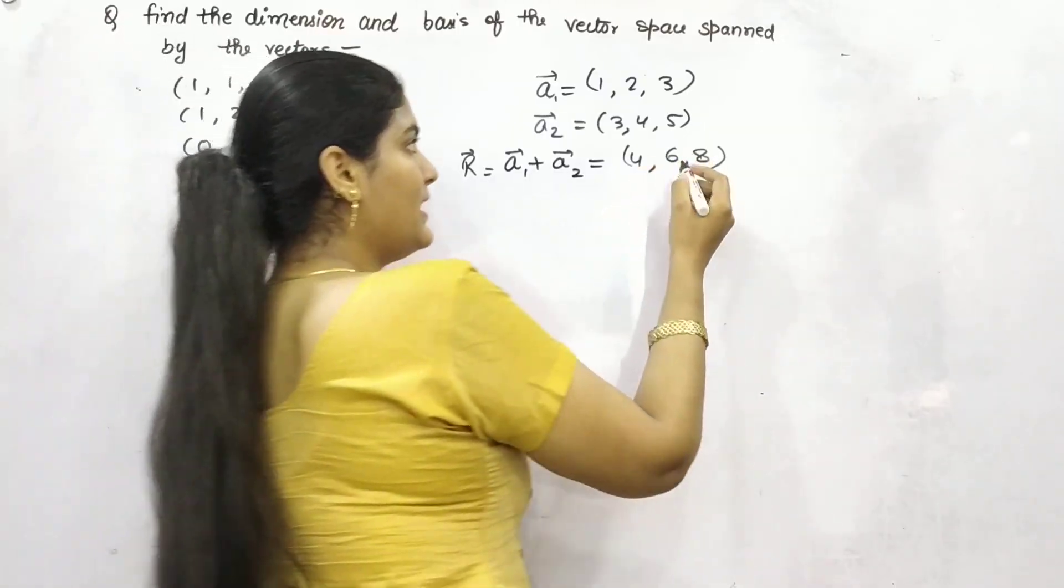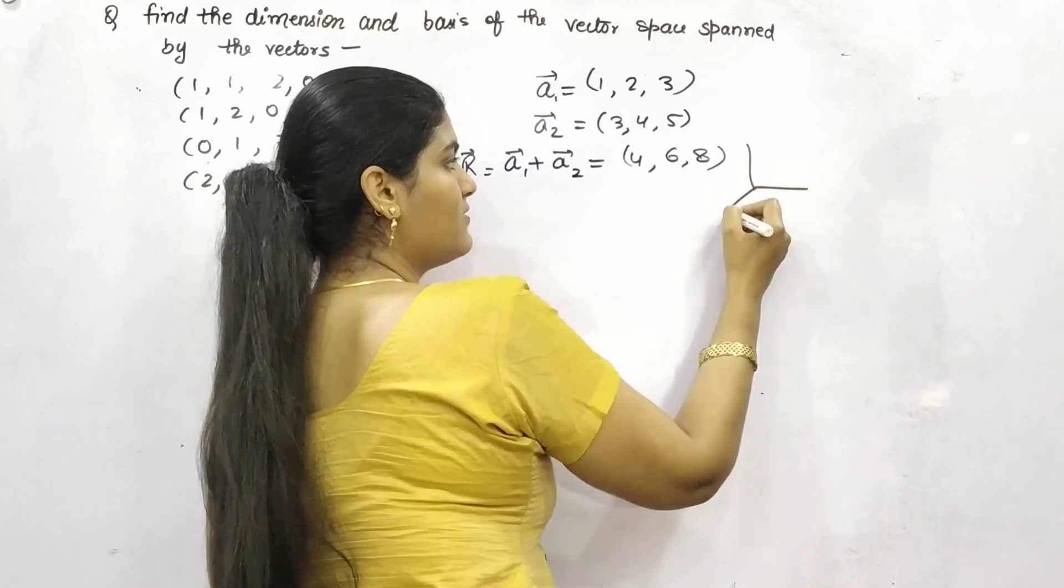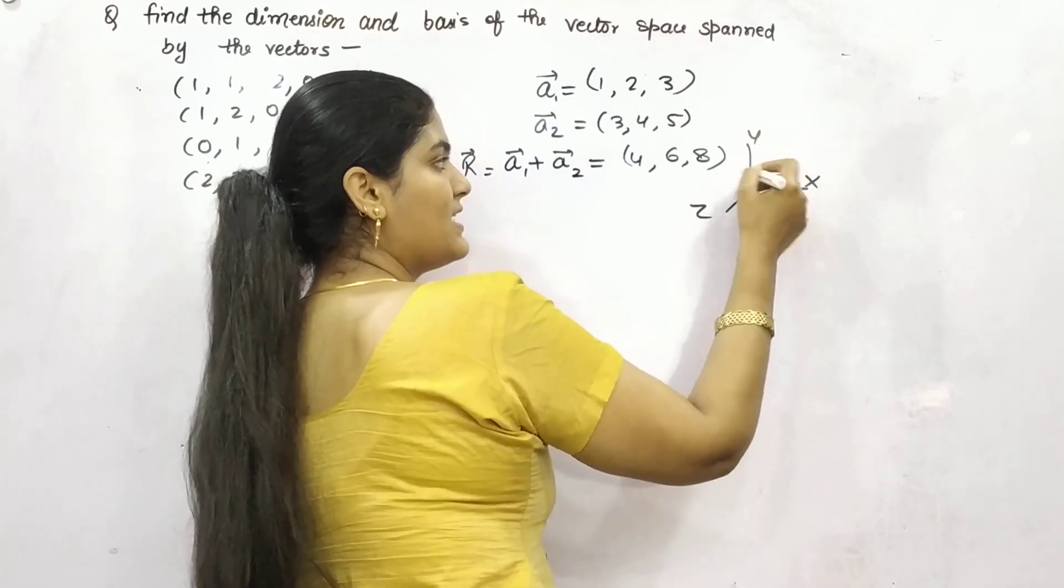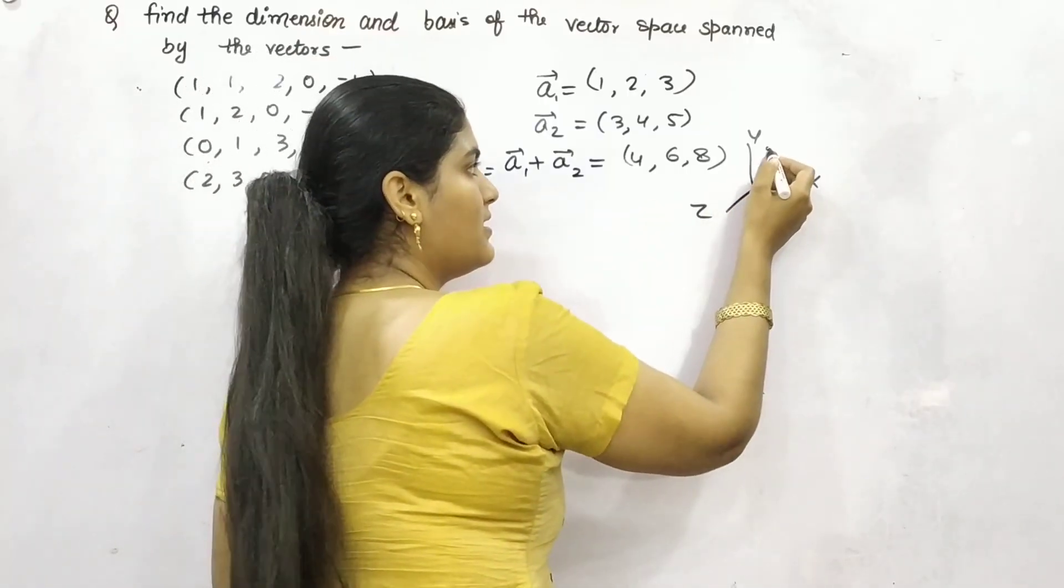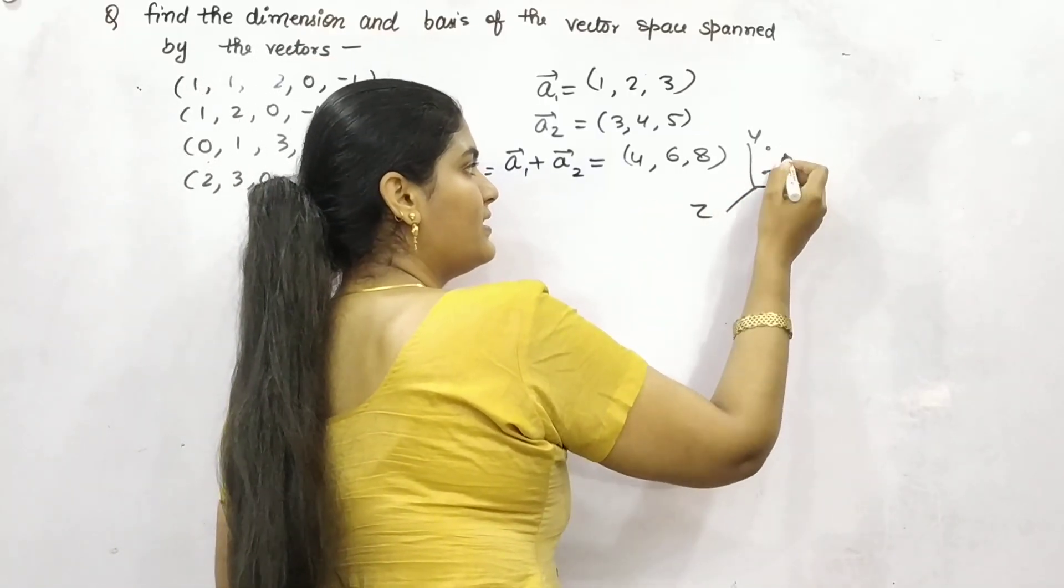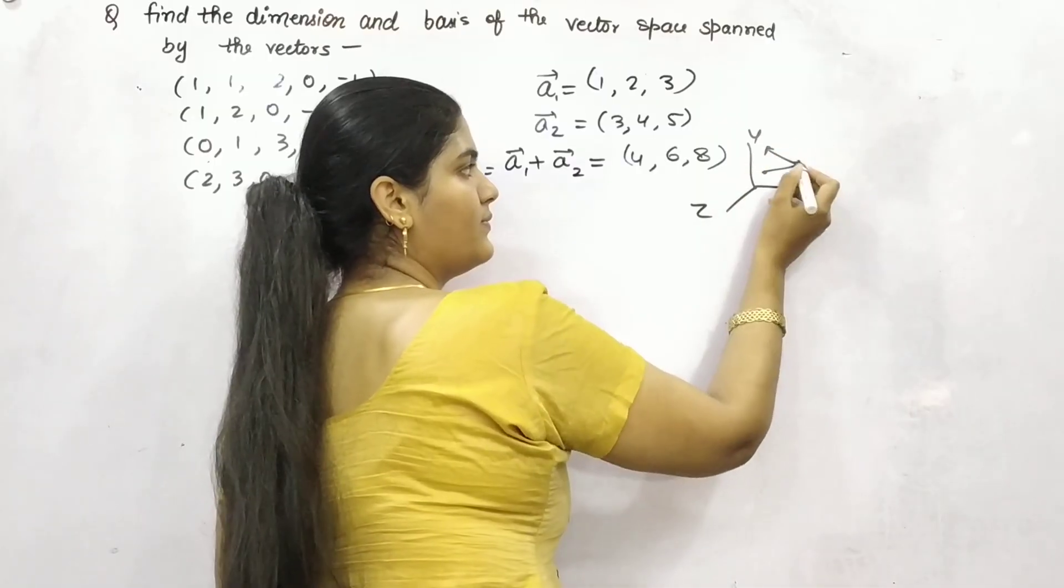Now you can see, let's say you know x, y, and z direction. So let's say any vector space here, a1 and here a2. It is moving like this and it is moving like this, let's say.